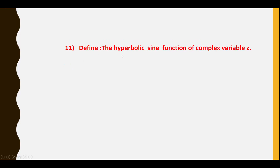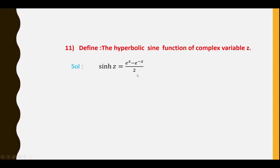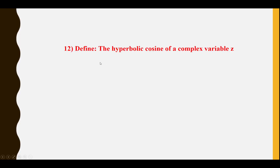Eleventh question: Define the hyperbolic sine function of complex variable Z. sinh Z = (e^Z − e^(−Z)) / 2.